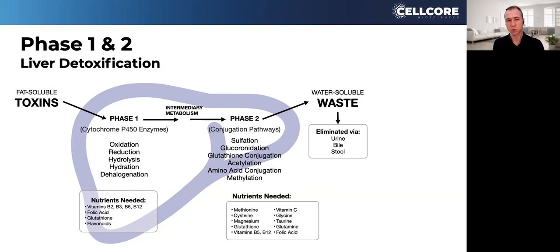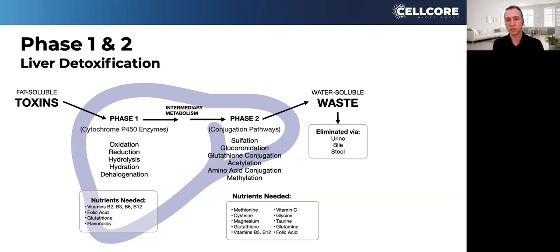If phase one or phase two has got nowhere to go — nowhere to dump it into the bile — then it gets backed up. If phase two gets backed up, phase one gets backed up. If phase one and two are backed up, then you're not detoxifying. It's not always a problem with phase one and phase two; oftentimes it's actually the bile excretion — phase three of the liver — that's the weak point.